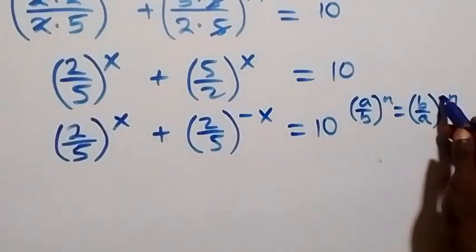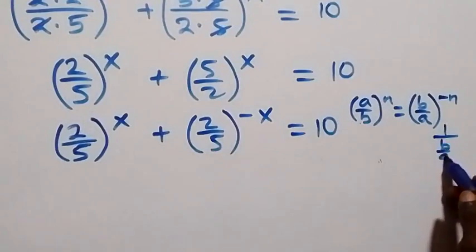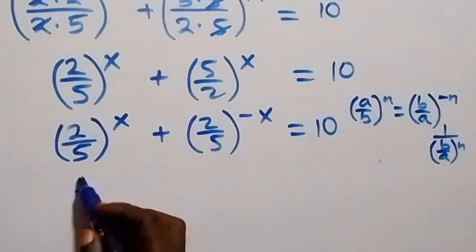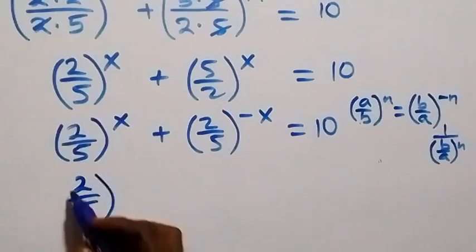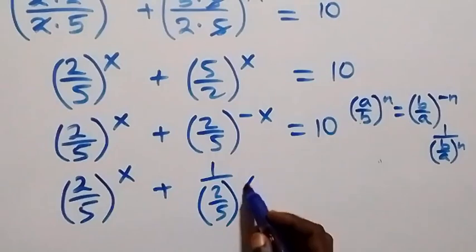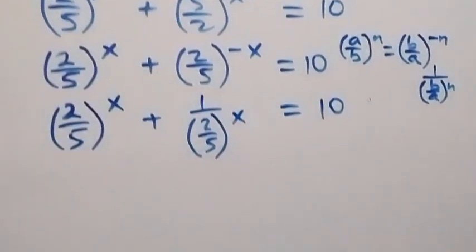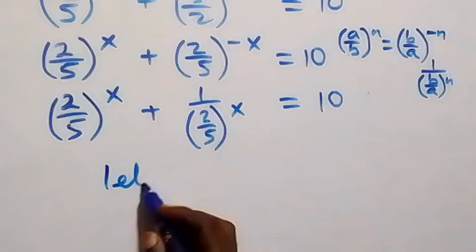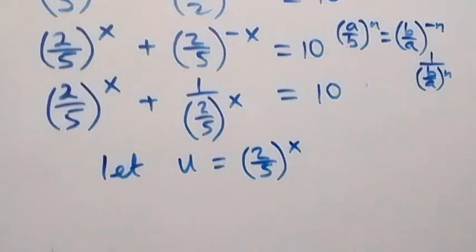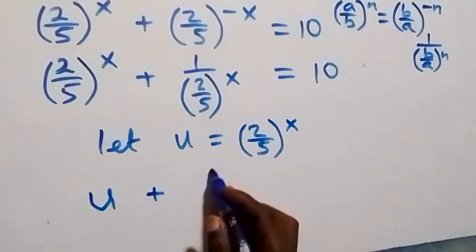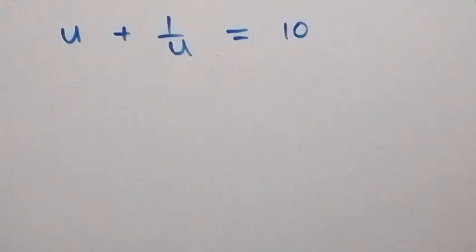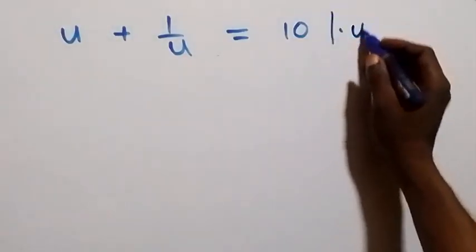We can equally write this as 1 over (2 over 5) raised to power x, where the negative exponent serves as the inverse. So we have (2 over 5) raised to power x plus 1 over (2 over 5) raised to power x equals 10. Let u equal (2 over 5) raised to power x.